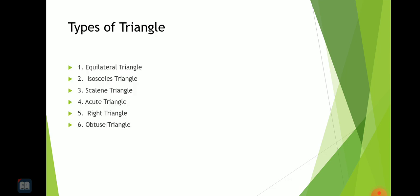Types of triangles: equilateral triangle, isosceles triangle, scalene triangle, acute triangle, right triangle, obtuse triangle. There are so many types of triangles.